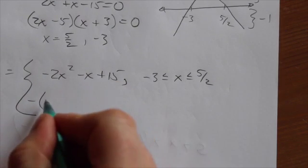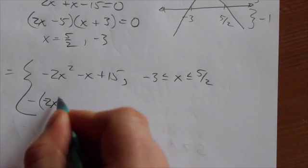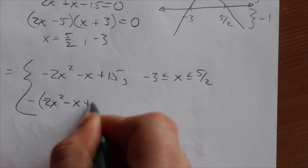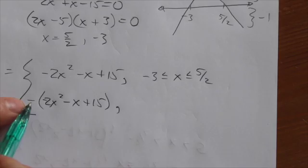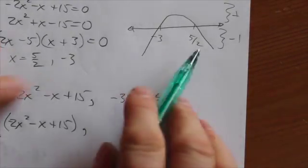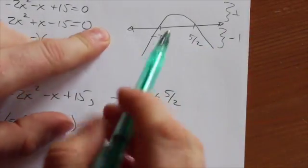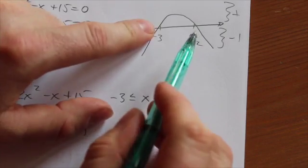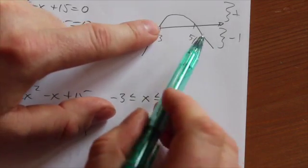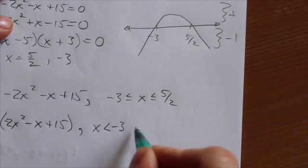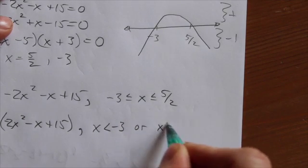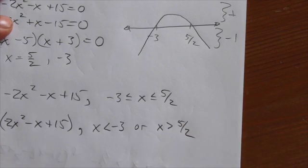Then the other thing that the absolute value does is if this function ends up being negative, then the absolute value throws a negative in front. That occurs here outside the two roots here, the two zeros of the function. That's gonna be where x is less than negative 3 or x is greater than 5 halves.